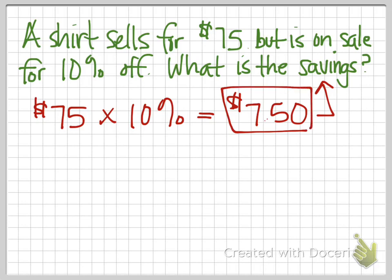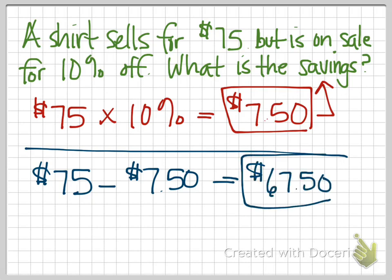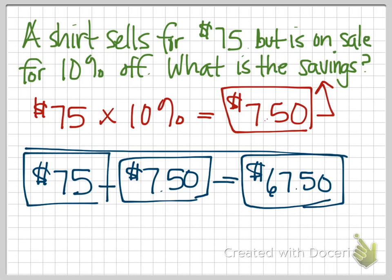Our savings is $7.50. Now, if they ask us how much we paid for the shirt, we would then need to say $75 minus the $7.50 in savings, and that result would be $67.50 — that is the amount that we would actually pay for the shirt. The $7.50 represents the amount of savings, and the $75 is the original cost of the shirt.